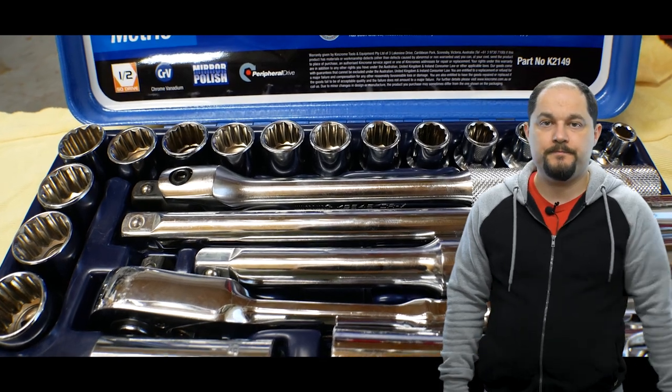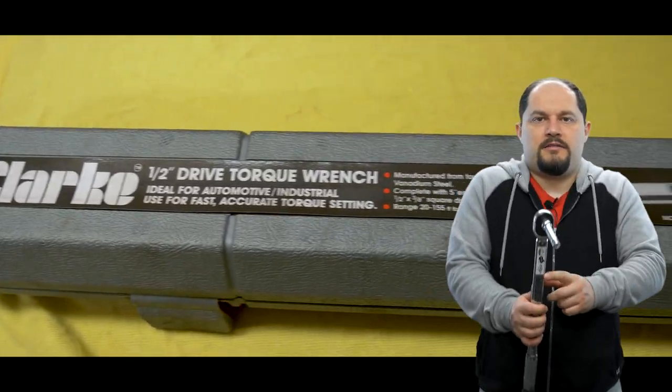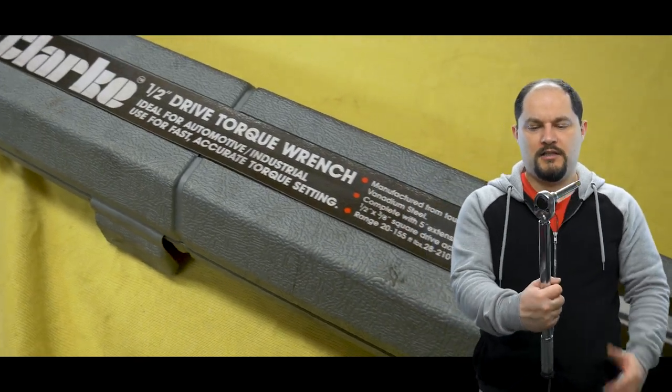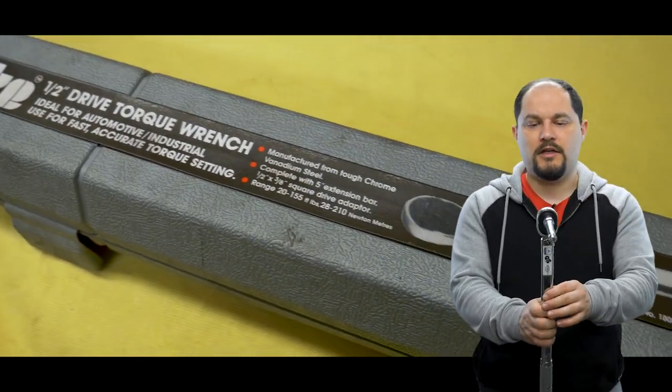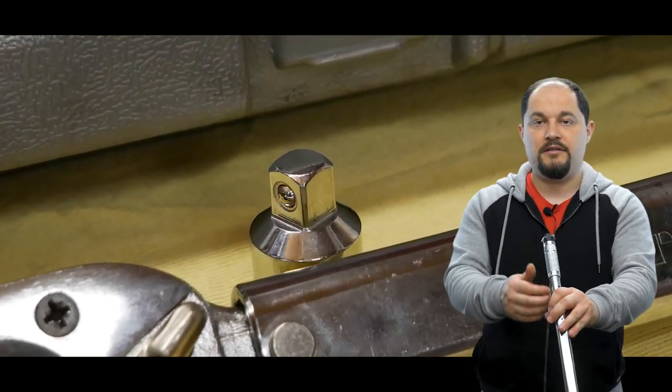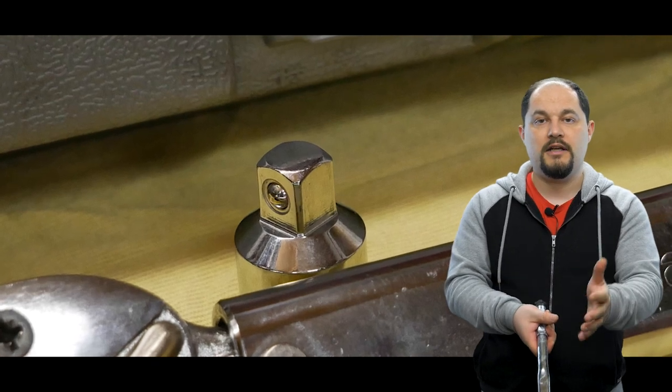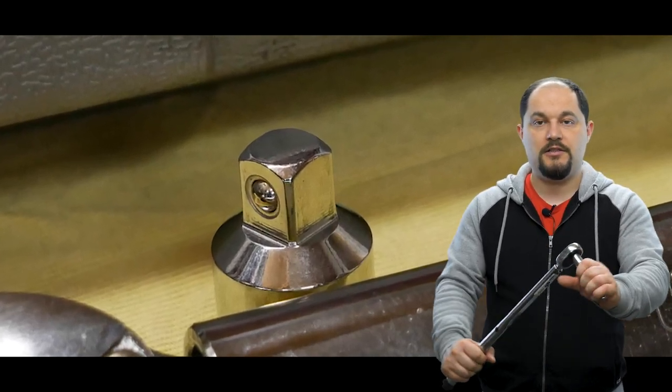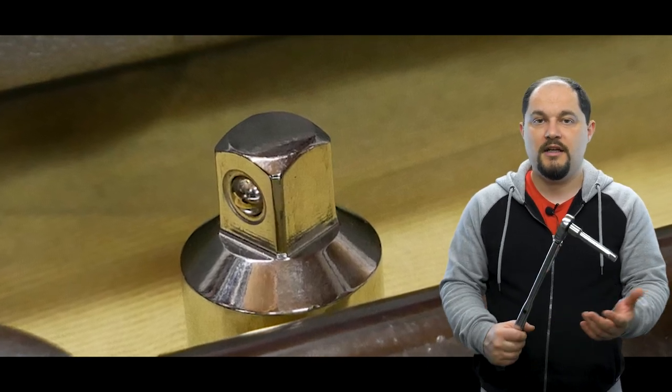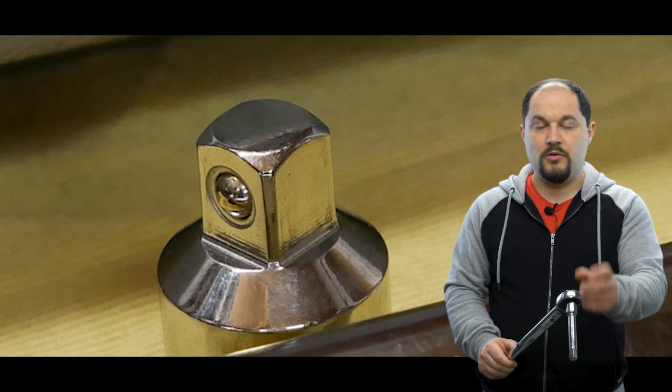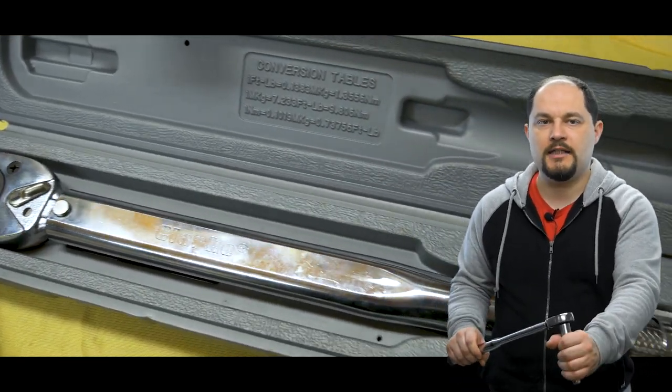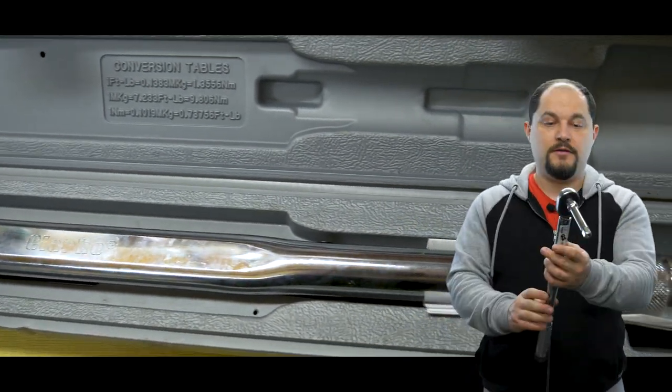My next item I recommend to get as a beginner motorcycle mechanic is torque wrenches. This is just a mechanical torque wrench, nothing fancy about it. You just twist this at the end and that will set your torque rating what you want to achieve. Basically then it just clicks when you need to stop turning it, that easy. This one is reversible, it doesn't click when you release the bolt, it only clicks when you're tightening it up.